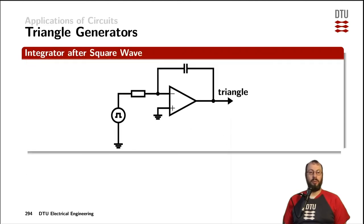If we need a more precise triangle at the output of the circuit, we can use a square wave oscillator and feed an integrator circuit with that one, and then the output would actually be a triangle.